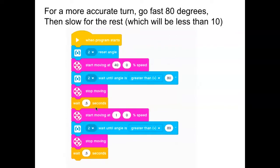Here is another way. You can look at this and start to experiment based on this. The idea for a more accurate turn: go fast for 80 degrees, then slow for the rest, which would be obviously something less than 10 degrees. When my program starts, I'm resetting the angle. I'm going to start moving. This is somewhat fast, 40% speed. Then I'm going to wait until the angle is greater than 80 degrees. It's going to be somewhere around maybe 81, 82, 83, 84, maybe even 85, 86. At that point, I'm going to stop moving.